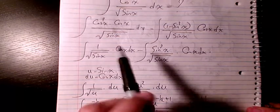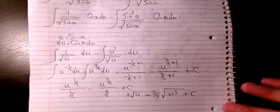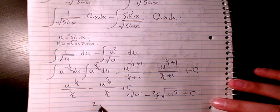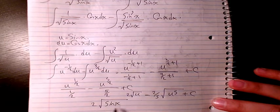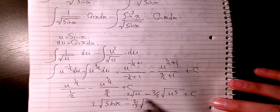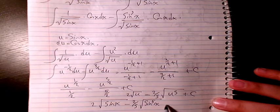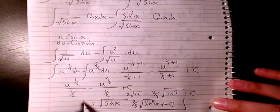And what was u? u was sine x, so I change it again. It's going to be 2 square root of sine x minus 2/5 square root of sine to the power of 5 x plus c. So that's the final answer.